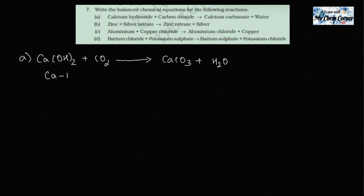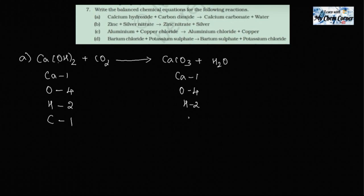Let's write the number of elements on the left and right hand side. Calcium: one on each side. Oxygen: two in Ca(OH)₂ and two in CO₂ makes four on the left; three plus one makes four on the right. Hydrogen: two on each side. Carbon: one on each side. The count is the same on both sides, so the reaction is already balanced.